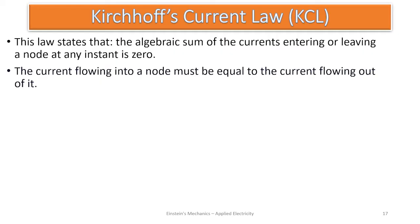What does this law state? Kirchhoff's Current Law states that the algebraic sum of current entering or leaving a node at any instant is zero. When we consider any node, the algebraic sum of current entering that node or leaving that node is zero at any instant.